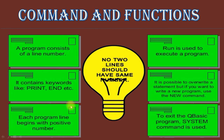In commands and functions, every program has a line number and contains keywords like PRINT. Each program begins with a positive line number. RUN is used to execute a program. It is possible to overwrite a statement, but if you want to write a new program, use the NEW command. To exit QBasic, the SYSTEM command is used.